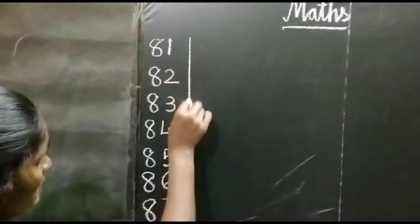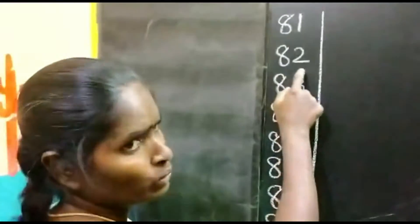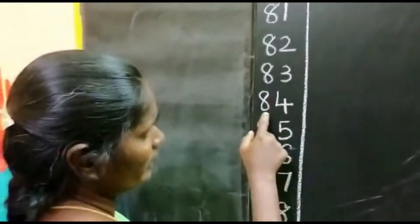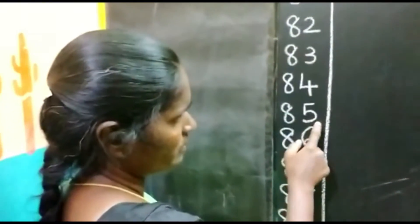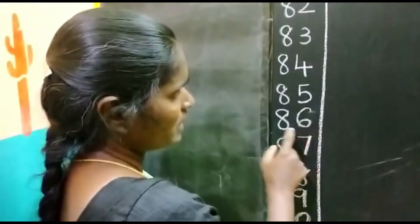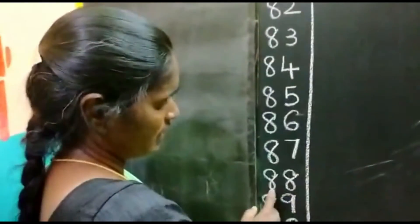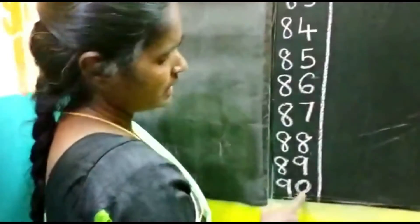Okay children. Once again. Repeat the number. 81. 82. 83. 84. 85. 86. 87. 88. 89. 90.